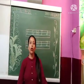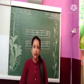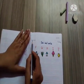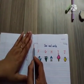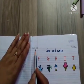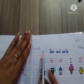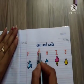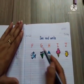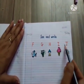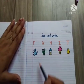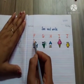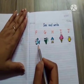Same way we will do this work in our notebook. Now children, firstly write the date: 16th April 2021. Here we will write the day: Friday. Okay children, see and write — copy exactly what ma'am has written on the board. F — fur, fish.